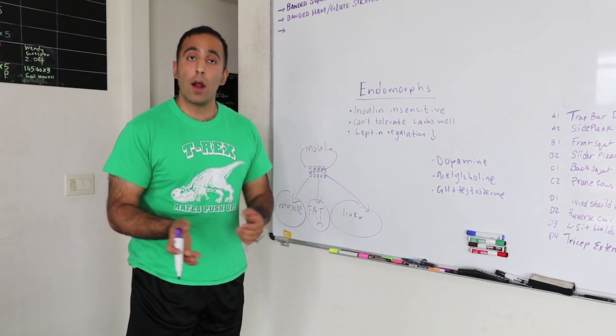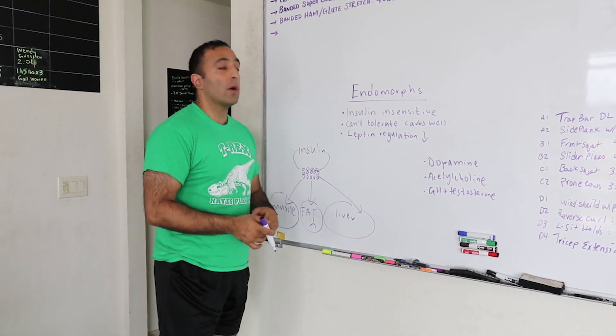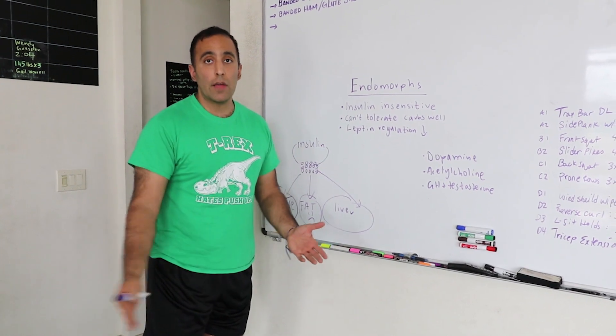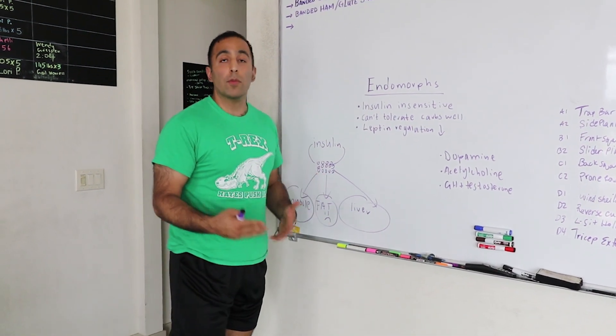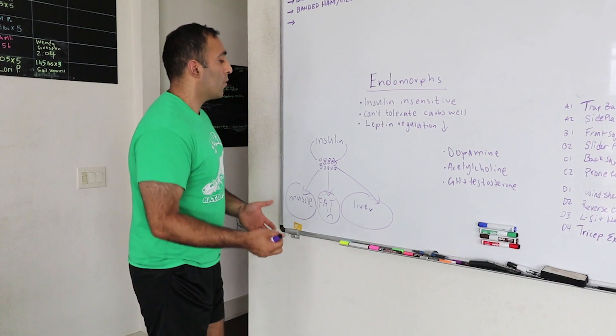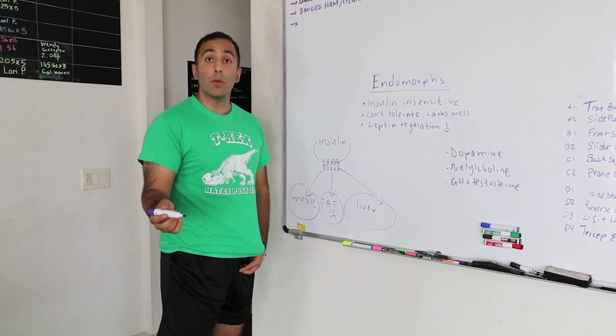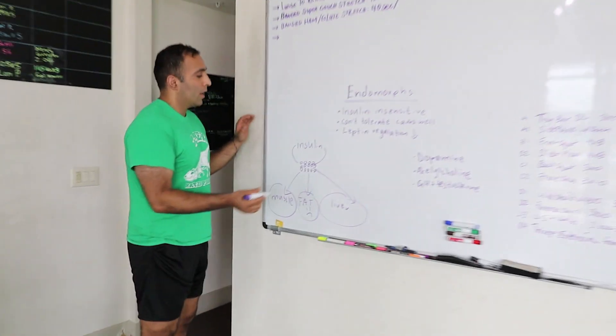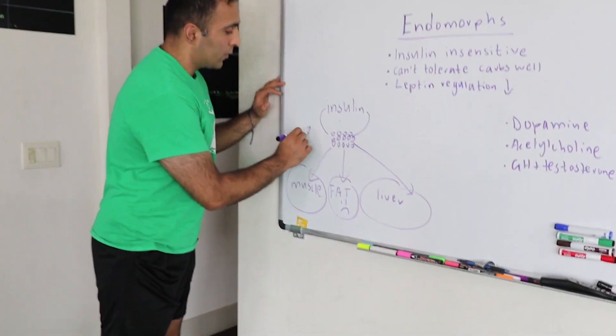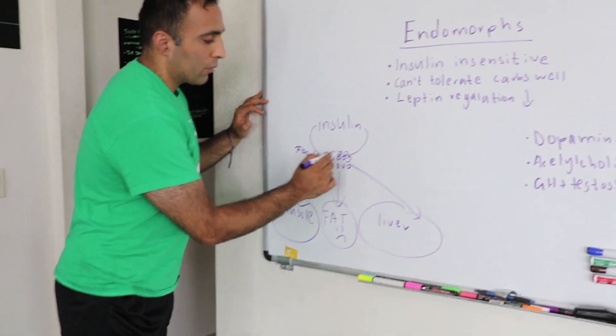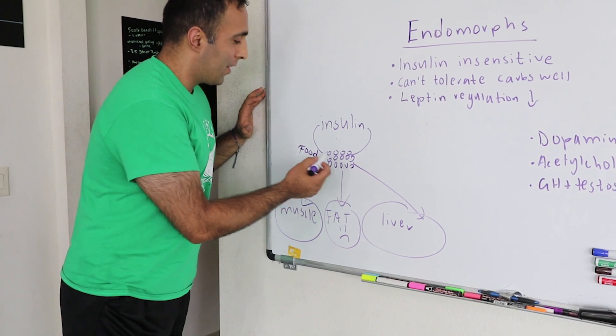To do so, we need to understand and meet the person where they are. Endomorphs are typically what we call insulin insensitive. If you know what insulin is, insulin is a hormone released by your pancreas and it's there to regulate where your food goes.